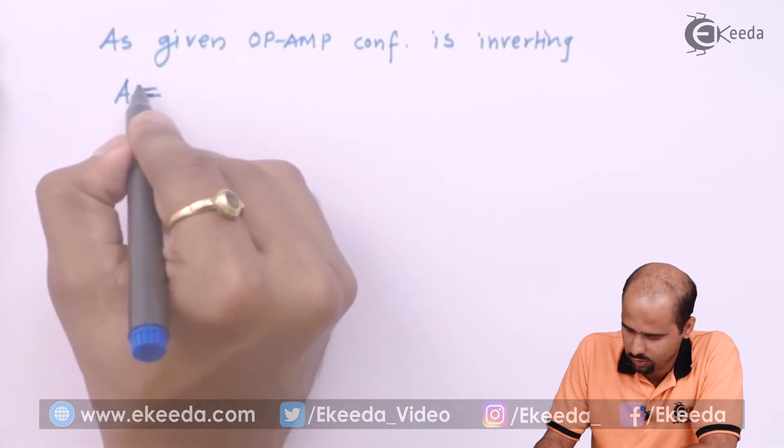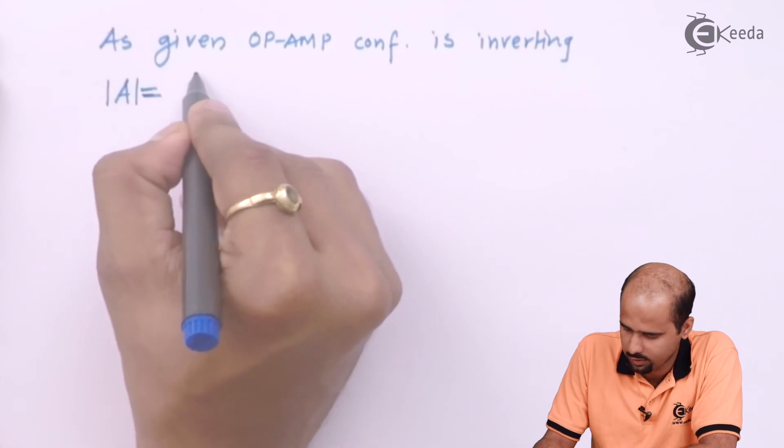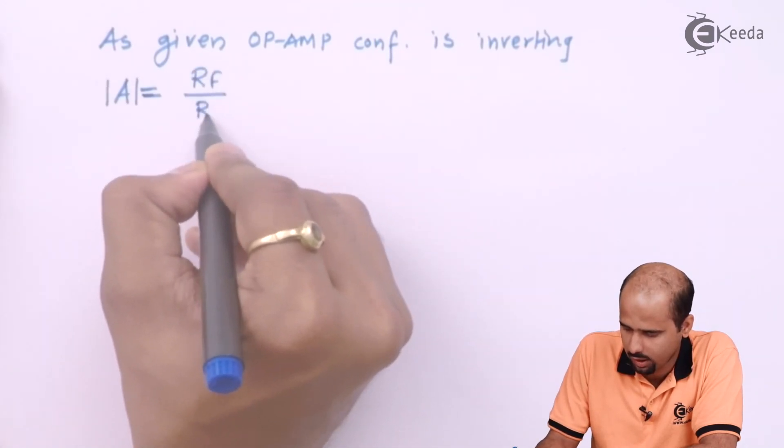So we will be saying that A is equal to mod of A is equal to RF divided by R1, okay?